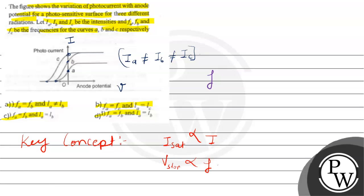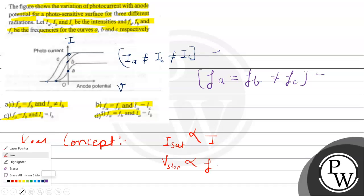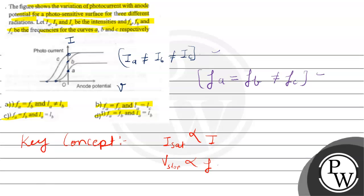अगर हम बात करें यहाँ पर, FA equals FB मिलेगा, is not equals to FC के. इन दोनों relations के according जो correct option मिल रहा है वो है: FA equals FB and IA is not equals to IB. तो option A जो रहेगा, वो इसका correct option रहेगा. बाकि सभी में intensities को same कर दिया गया है, तो सारे options लथ हो जाते हैं. Option A correct answer रहेगा. Hope you understood it well, best of luck.